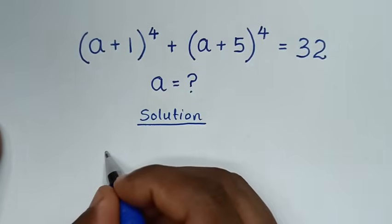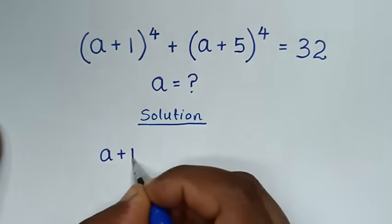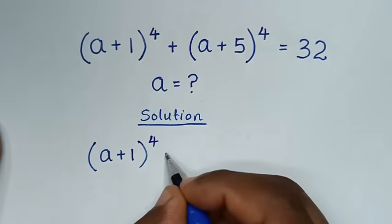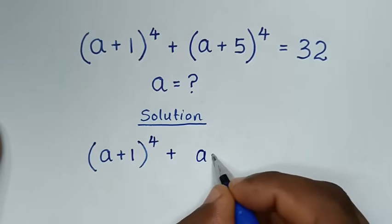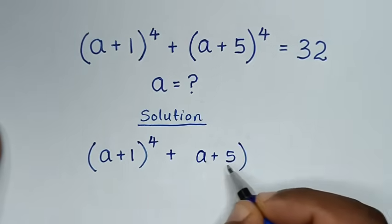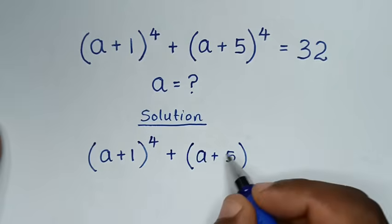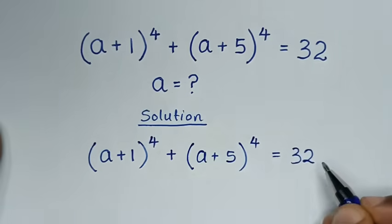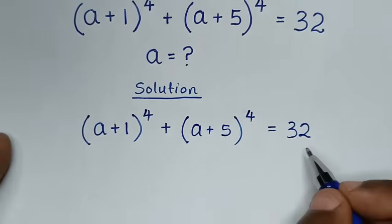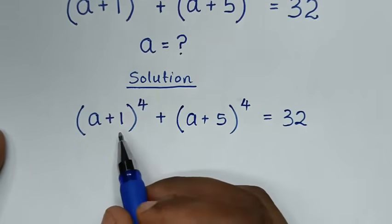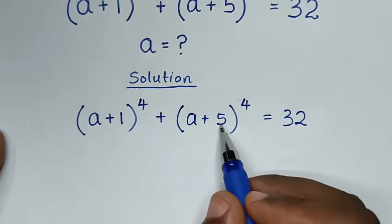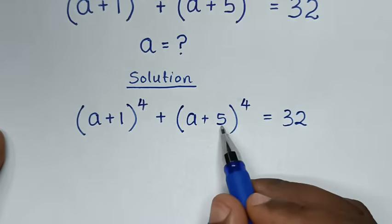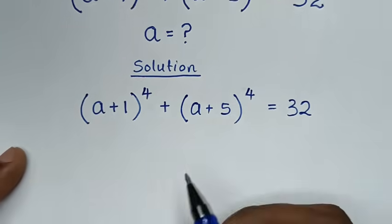Our problem is (a + 1)⁴ + (a + 5)⁴ = 32. We find the average of the constants 1 and 5: 1 + 5 = 6, divided by 2 gives 3. So we'll use 3.